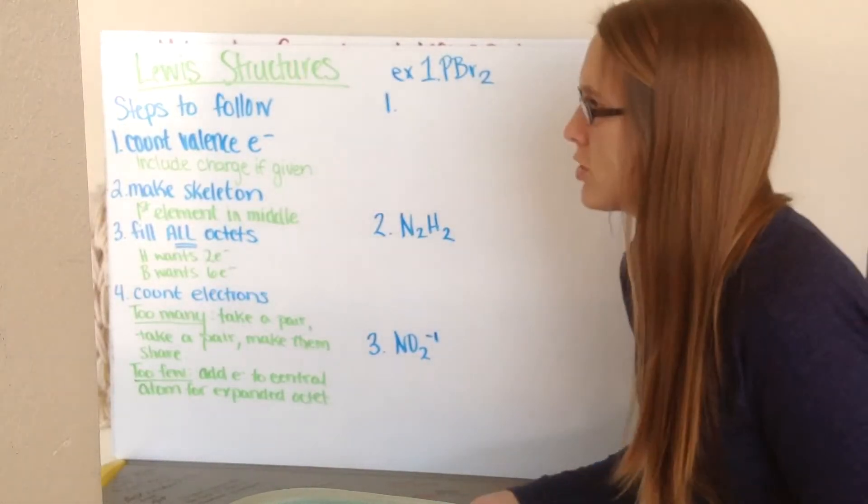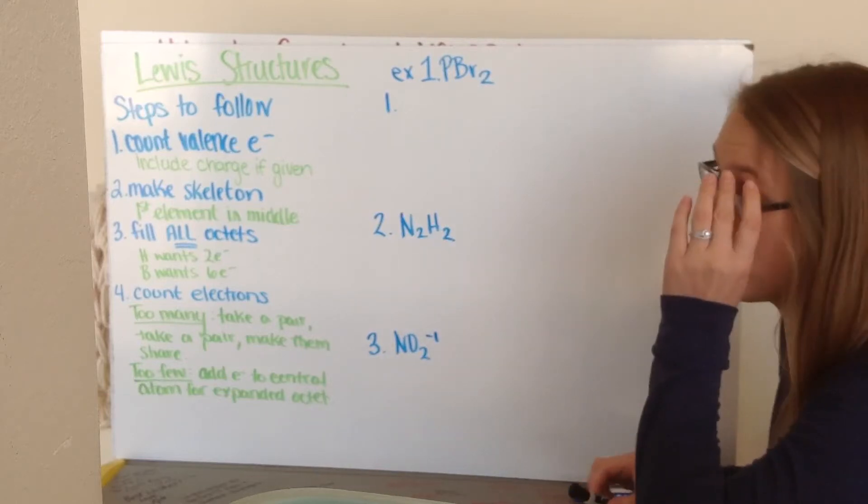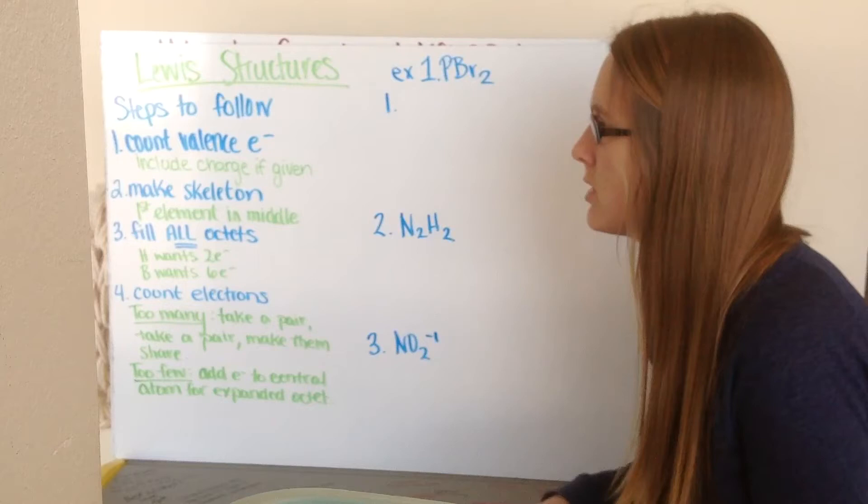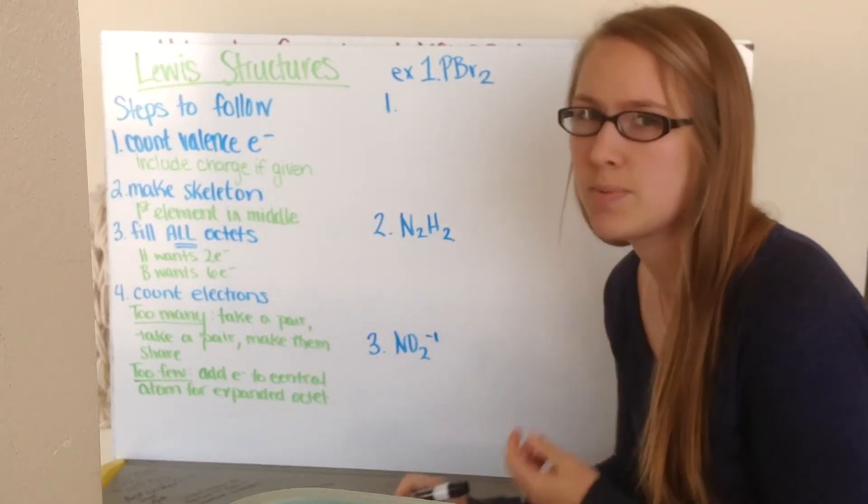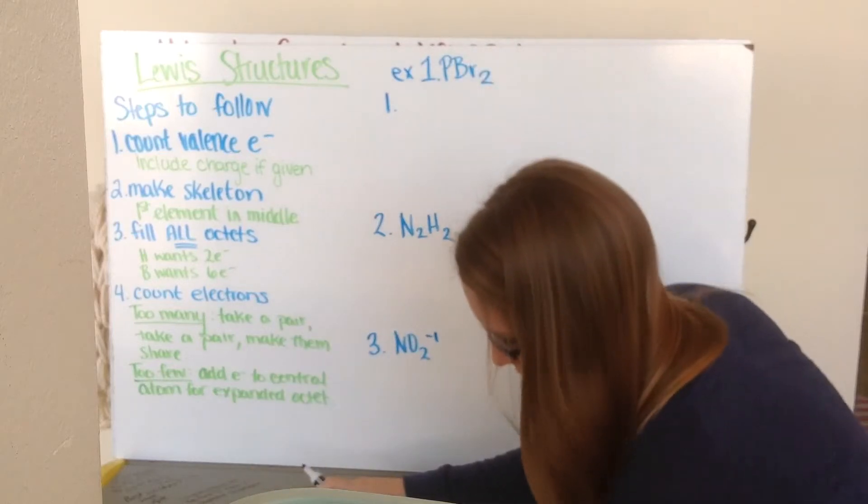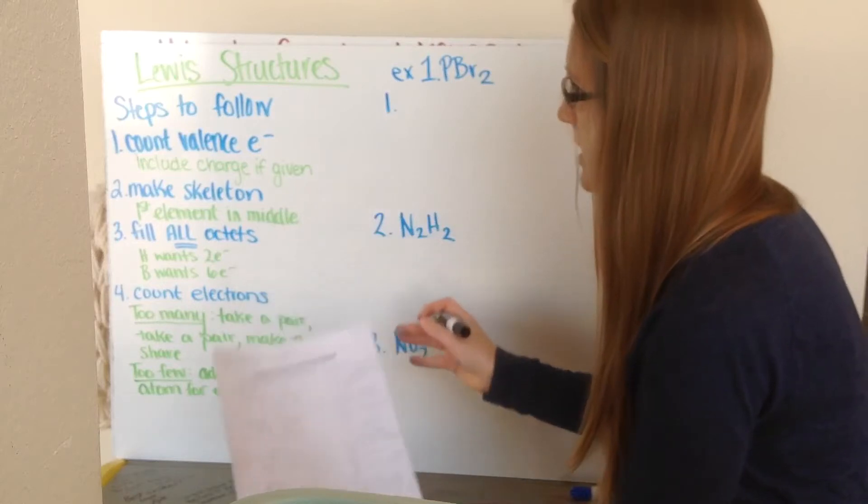This video is on Lewis structures. So a Lewis structure is a way to see what the actual atom and molecule, the atoms together to make the molecule, are going to look like. And to do this, there's a couple steps that we follow. So you want to write these down, the steps, probably over on the right-hand side of your paper here, and then we'll do the examples on the left-hand side.